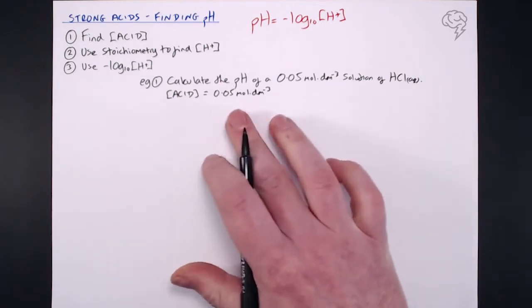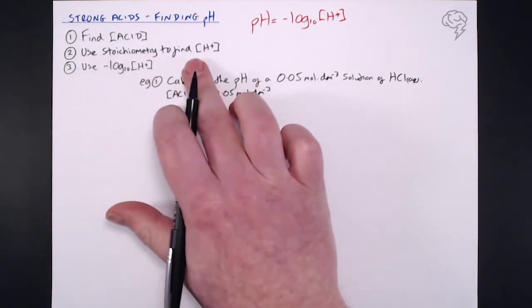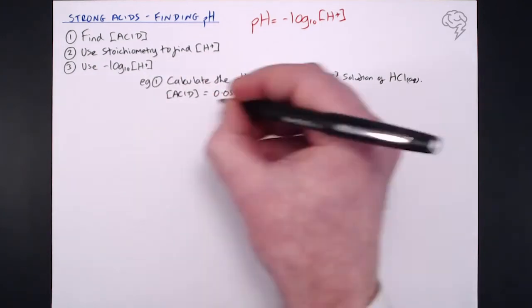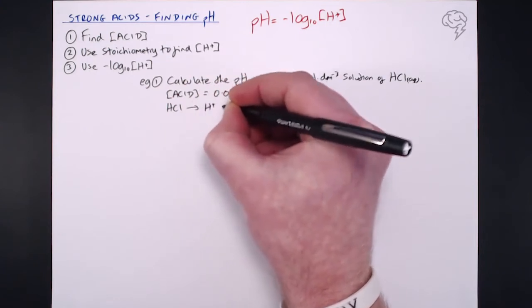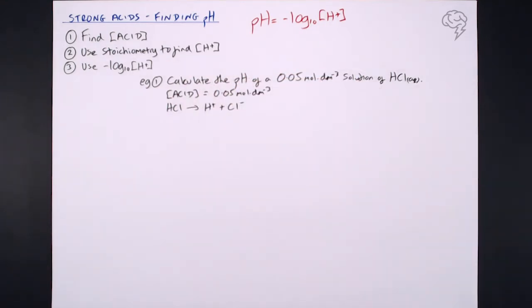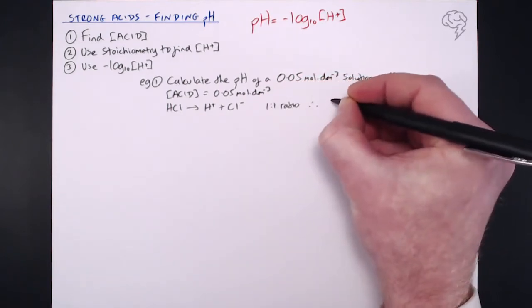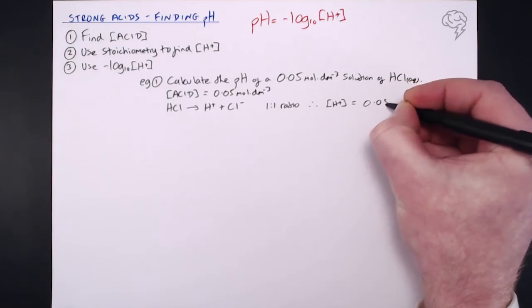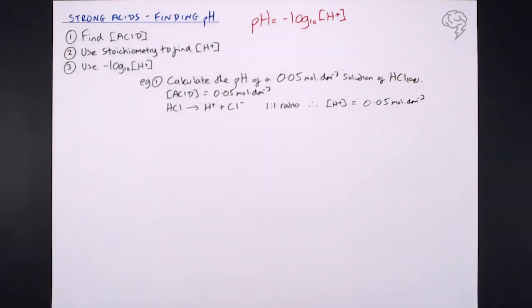Is this a mono, di, or tribasic acid? We need to use stoichiometry, so we look at the dissociation. HCl dissociates to one H⁺ and one Cl⁻, so it is a one-to-one ratio. Because it's a one-to-one ratio, the hydrogen ion concentration is also 0.05 mol dm⁻³.